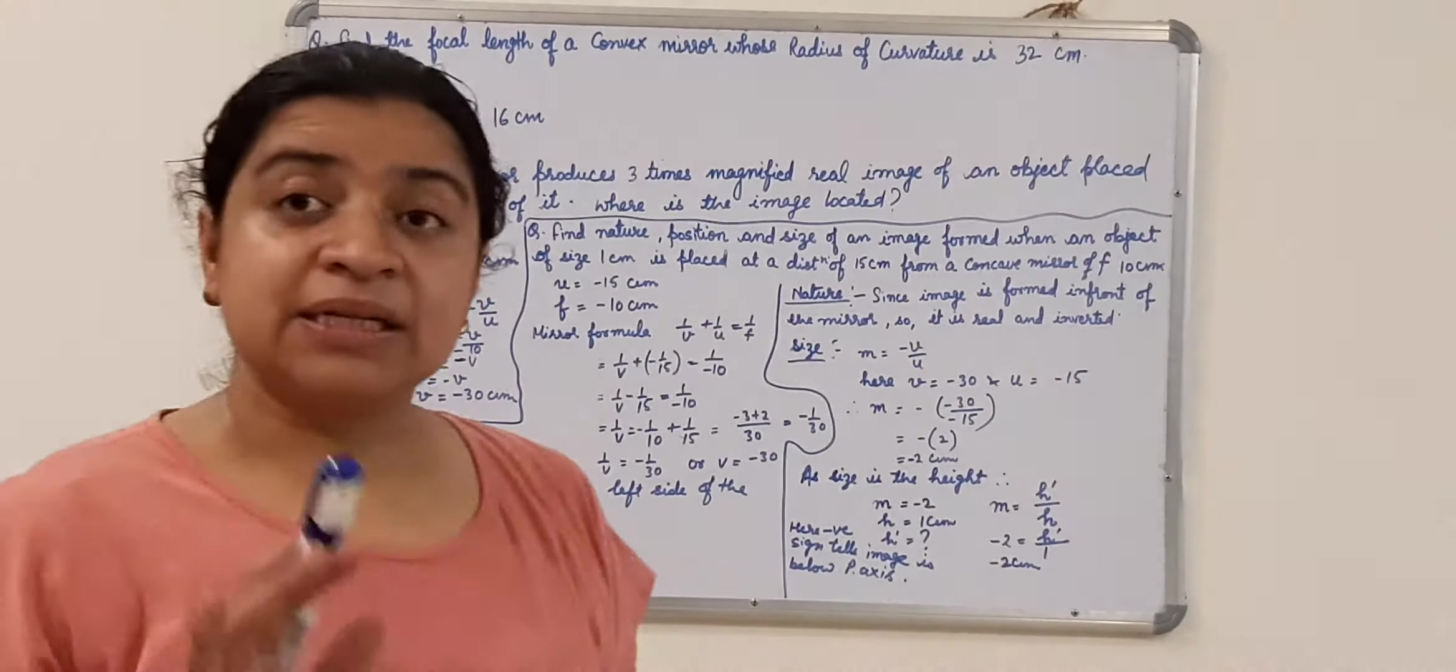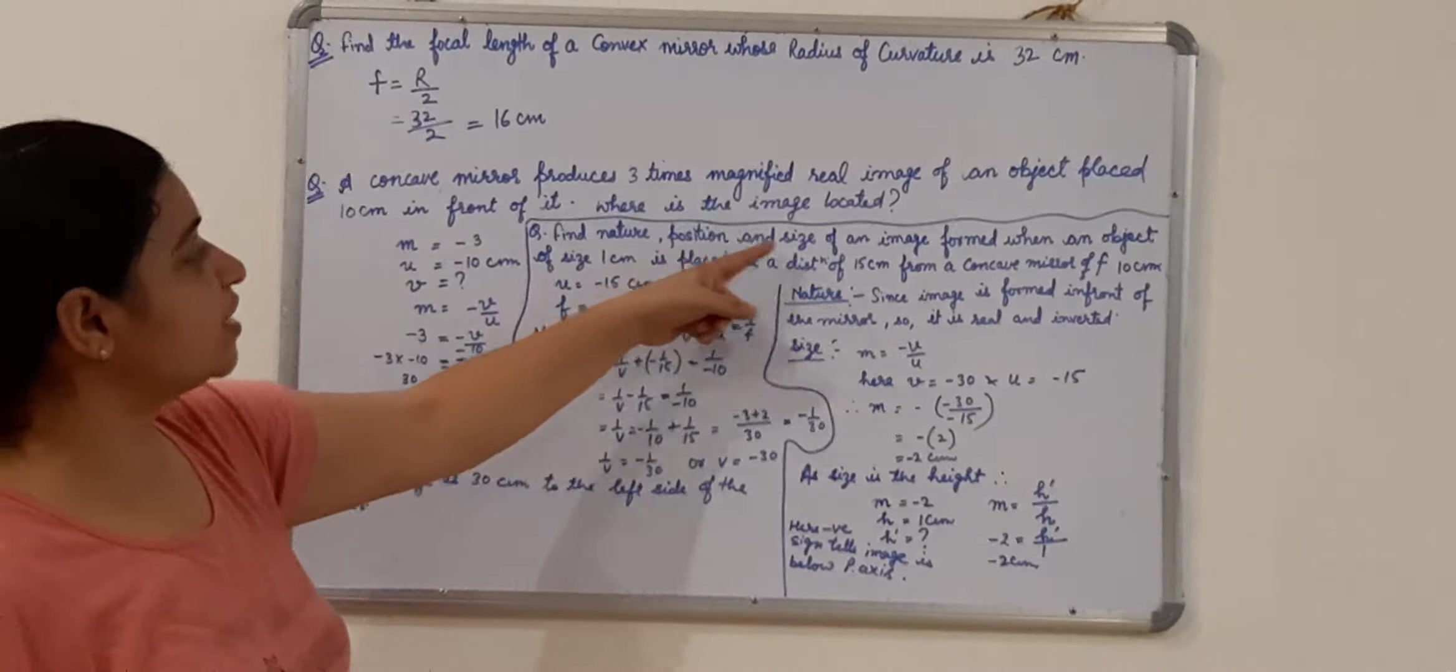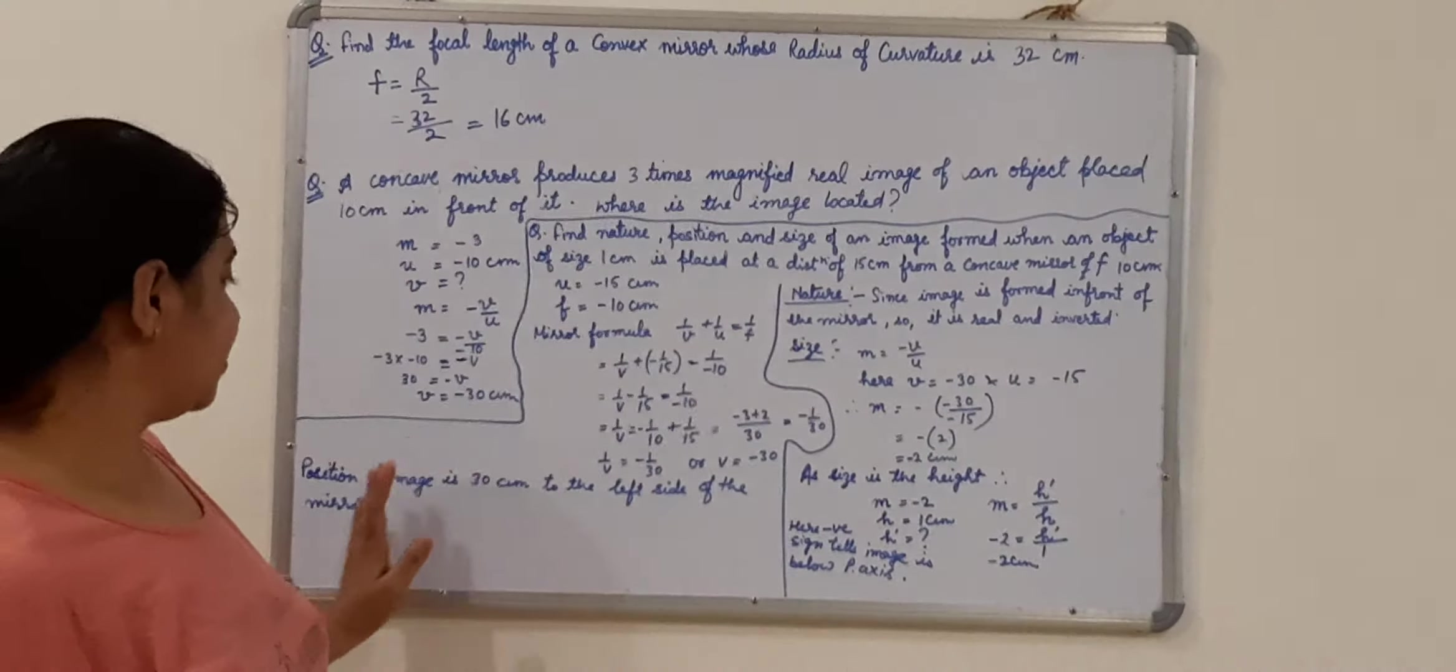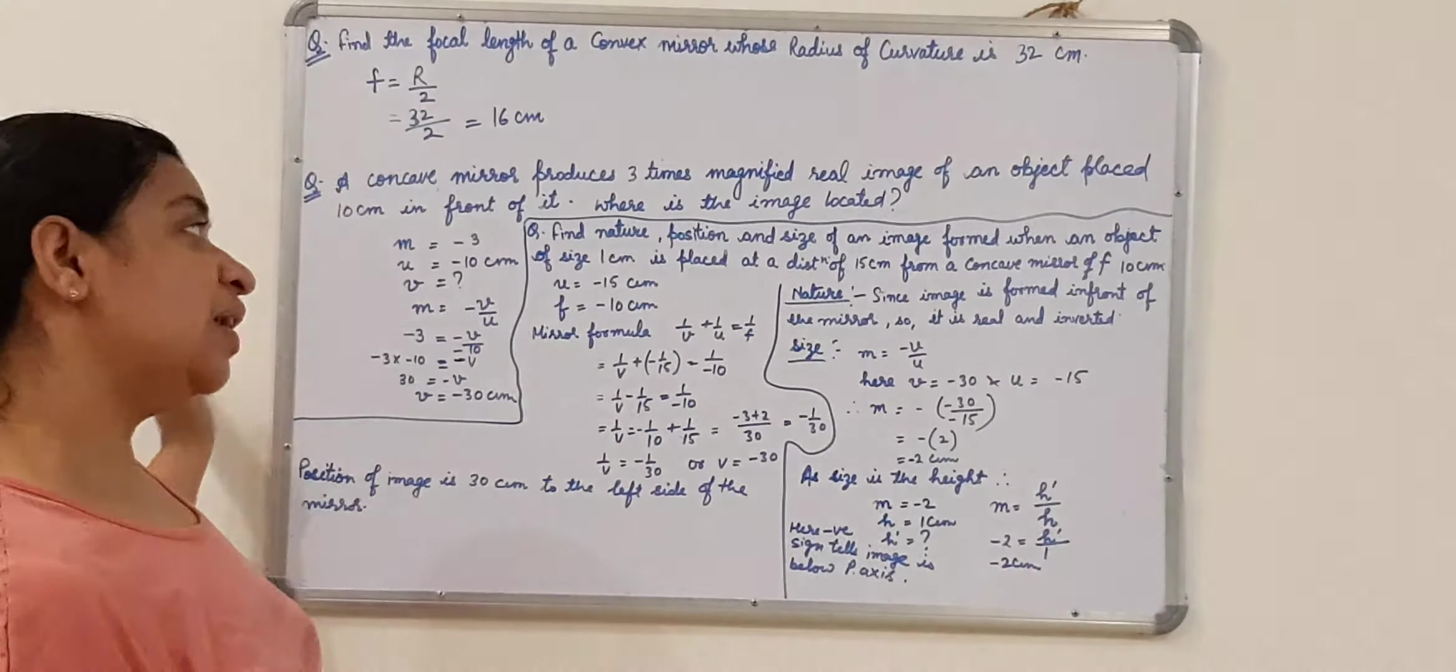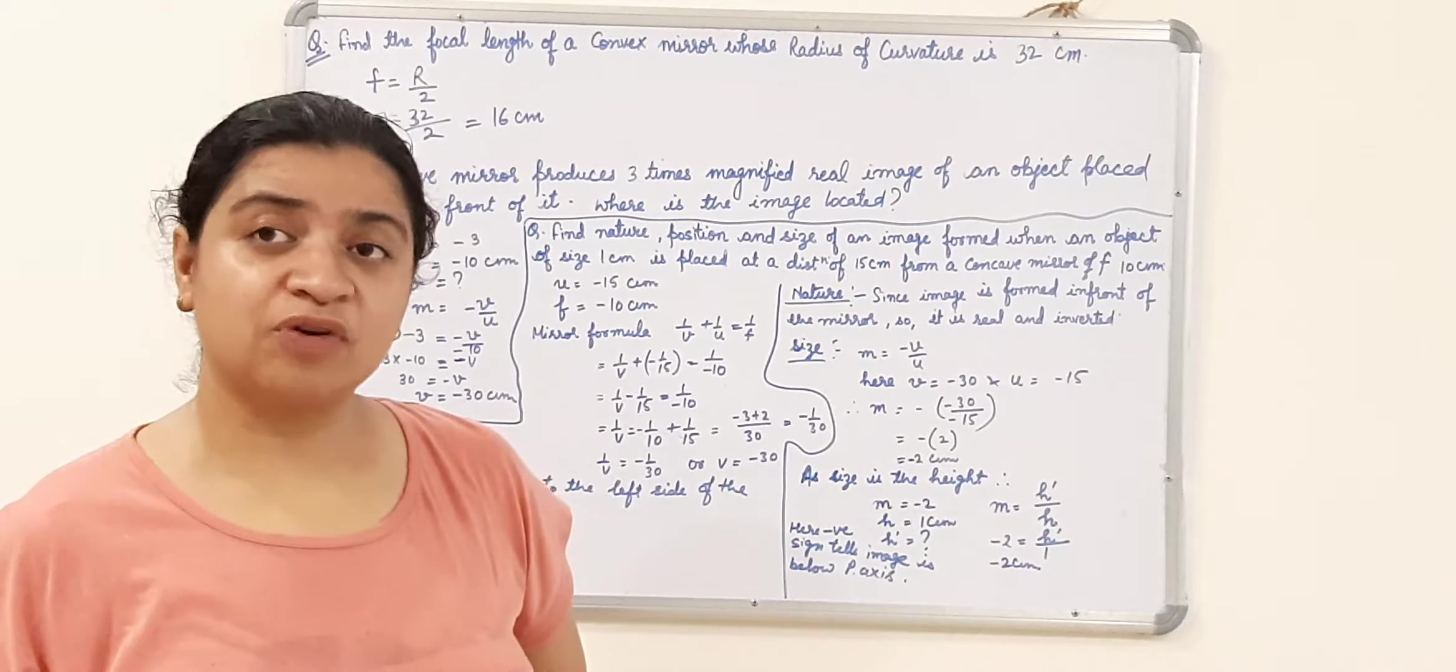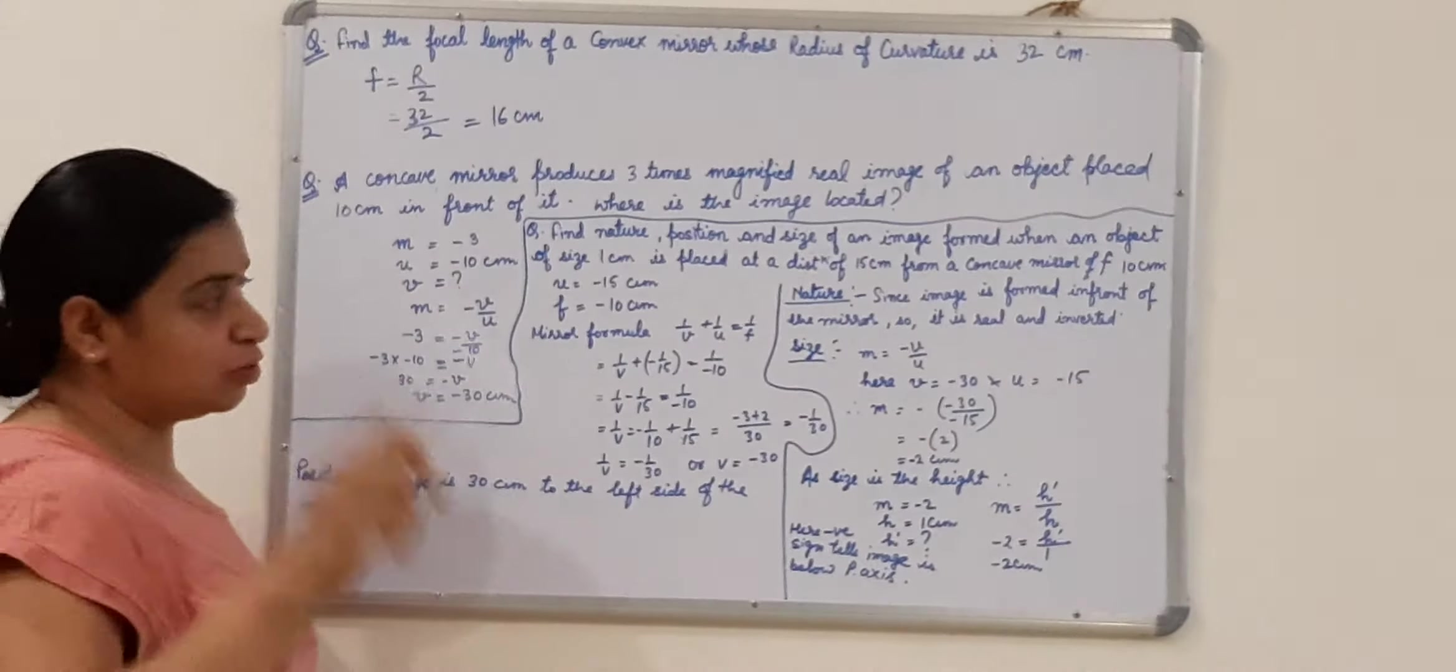What does this minus 30 with V mean? Minus 30, or now, where is the image located? Nature, position and size. Position, this is the position we are getting. Position of the image is 30 centimeter in front of the mirror. The minus sign tells us it is again on the left hand side of the mirror. You know, the ray diagrams in case of concave mirror, they are always formed on which side? Left hand side. Only except the last position.